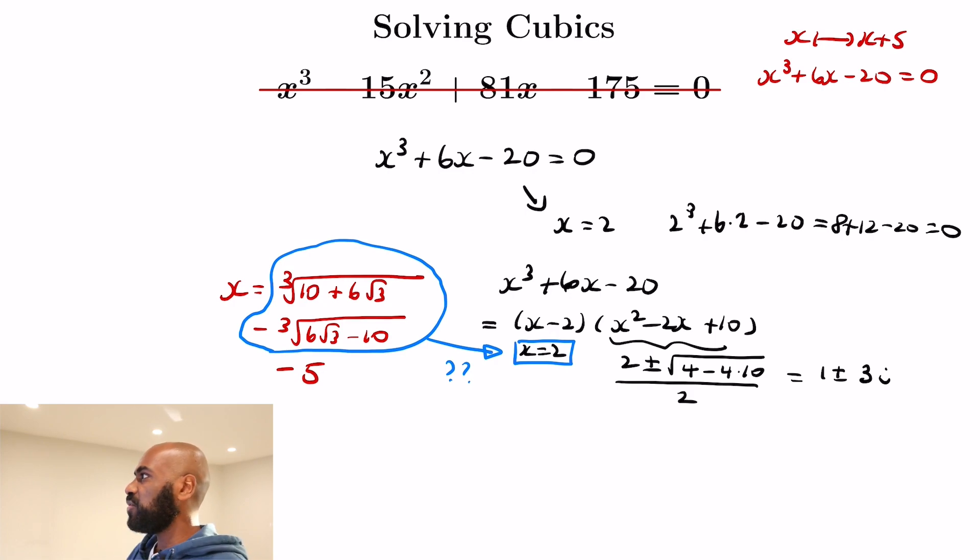Well, actually similar things to what we did in these computations can tell you why that thing on the left hand side is actually 2. You can kind of do things in reverse where you set x to be this quantity with the complicated cube roots...